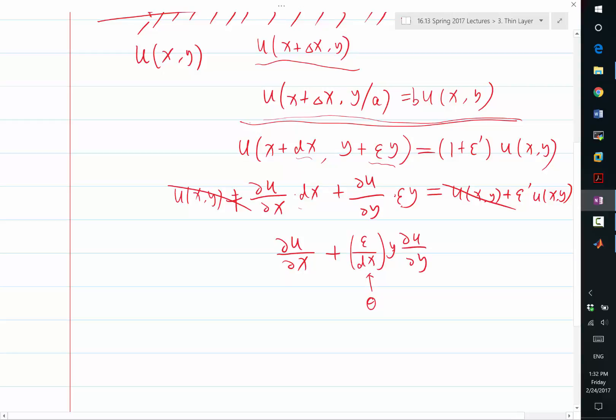This is basically epsilon. I am dividing everything by dx. This is equal to epsilon prime over dx times u itself. So let's call this alpha.